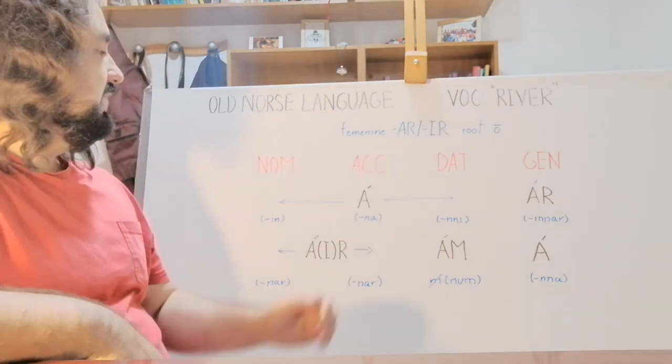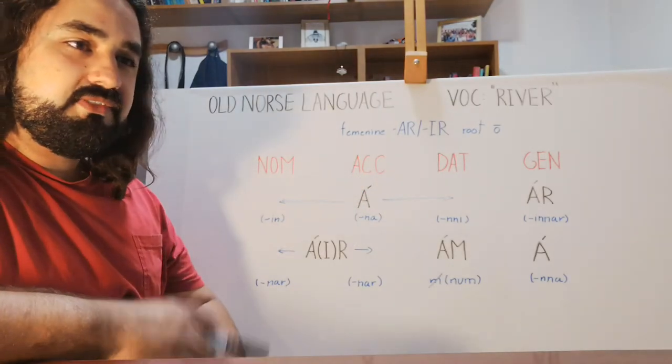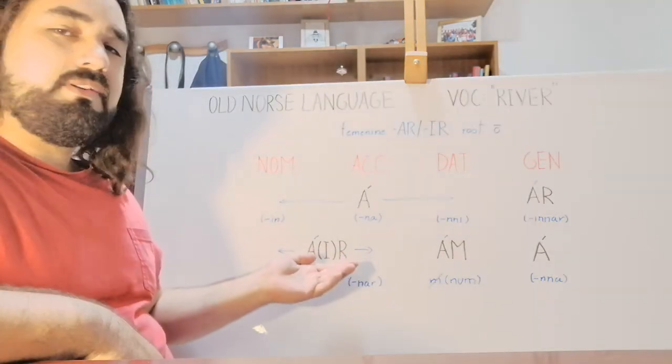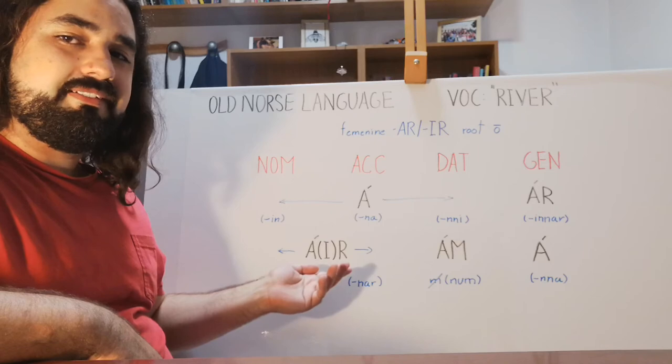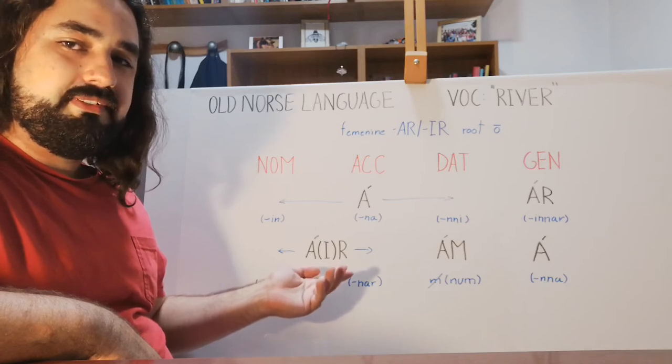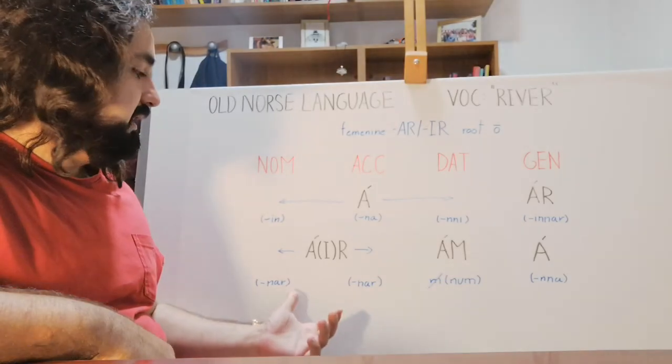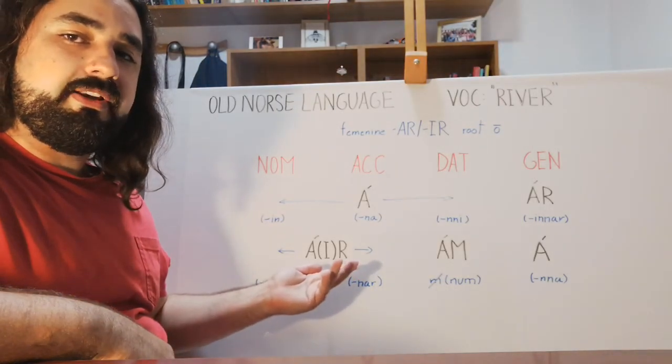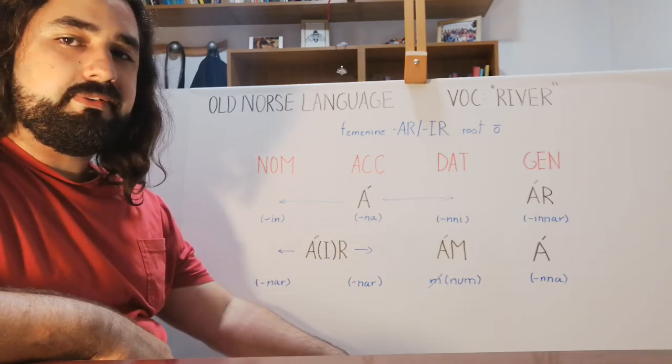In the nominative and accusative forms, both share the same two possible alternatives: ár or áir. And it also takes the same article for both, which is árnar or áirnar.